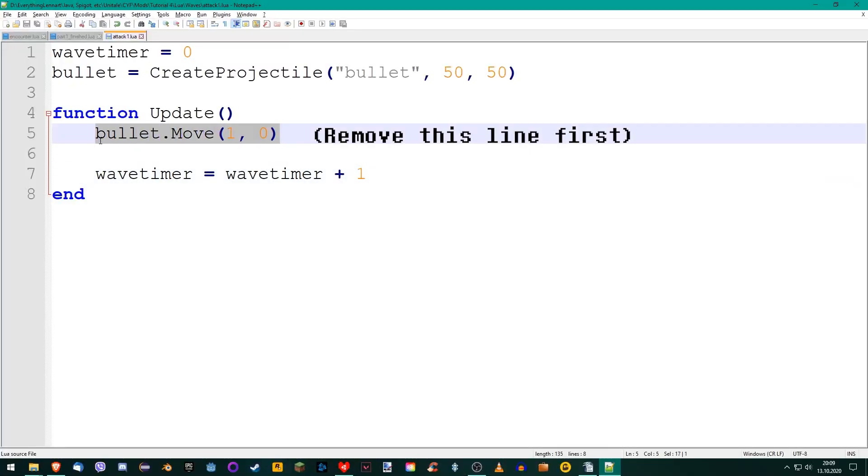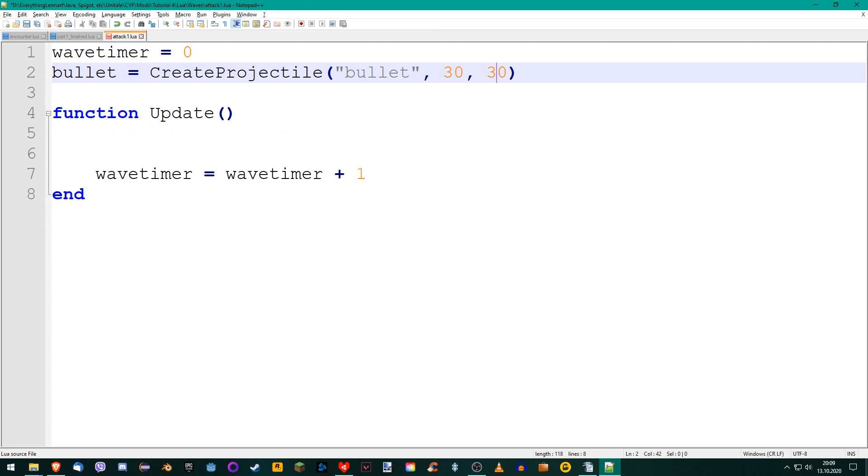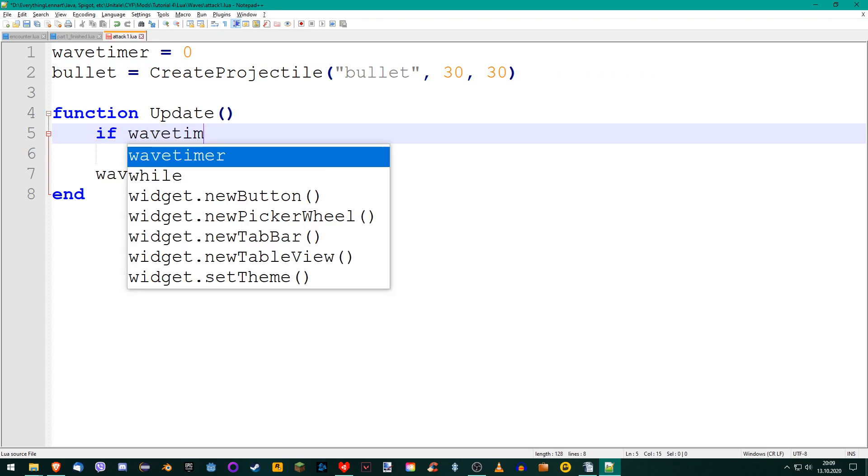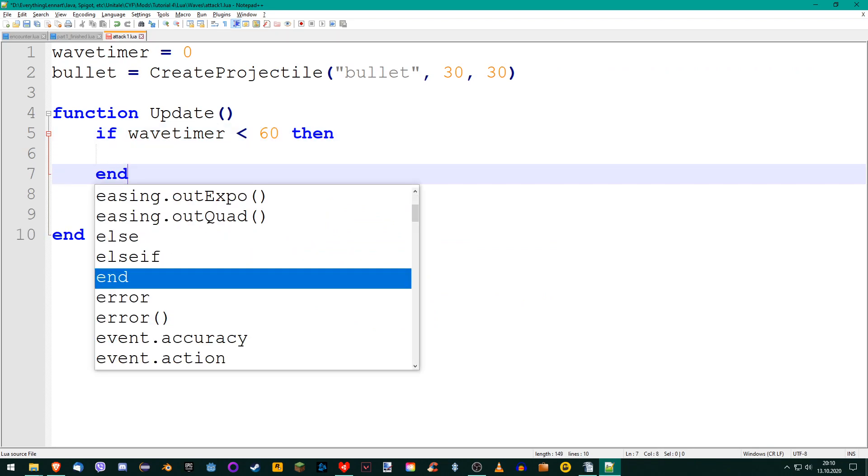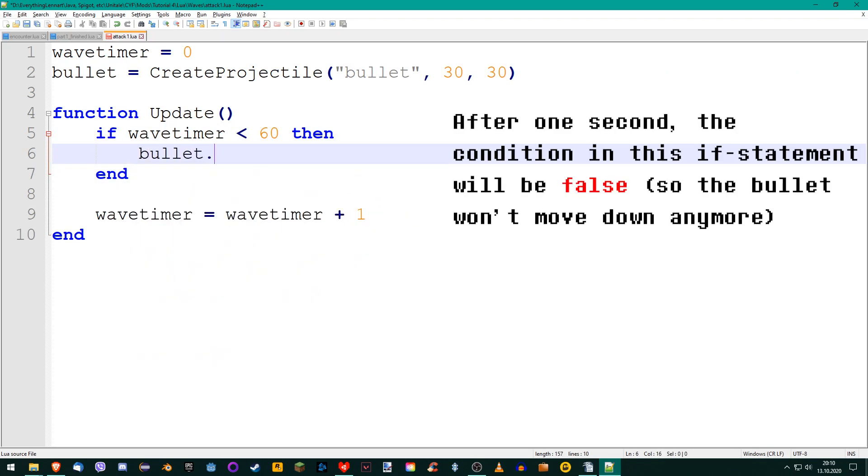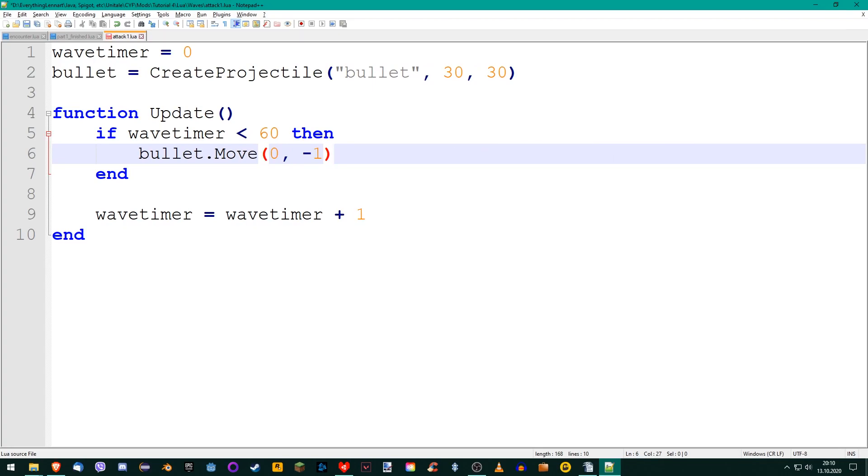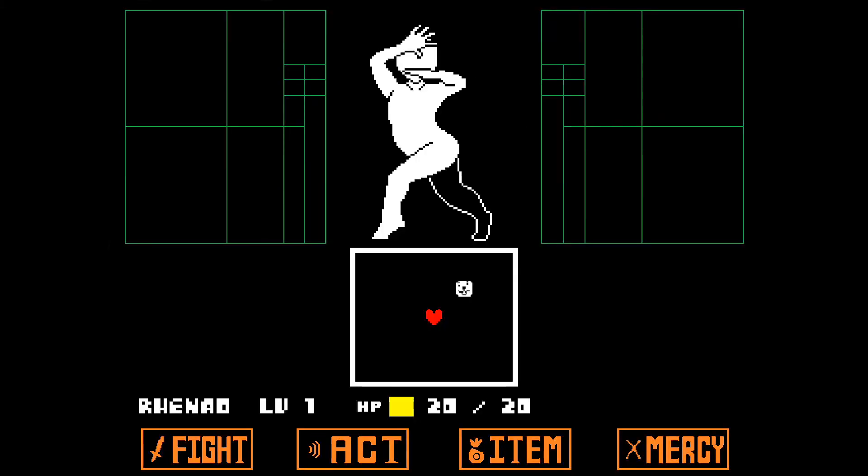Let's finally create our wave. Spawn a bullet with the bullet.png sprite at x30 and y30, so to the top right of our soul. Create a bullet object like I've shown you before. Then, add an if statement. Check if the wavetimer is smaller than 60, if so, move the bullet down. Because Unitale runs at 60 fps, the wavetimer increases by a total of 60 every second. This means that the if statement is only true for the first second of the wave. Because of that, the code inside of it will only run for one second, causing the bullet to move down a bit.